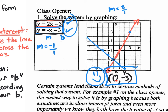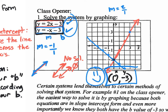Will you always get one answer? Most of the time yes, but sometimes you might end up with parallel lines that never cross — that's when you say no solution. Or sometimes you graph both lines and they're the exact same line, perfectly on top of each other — then that's infinitely many solutions.